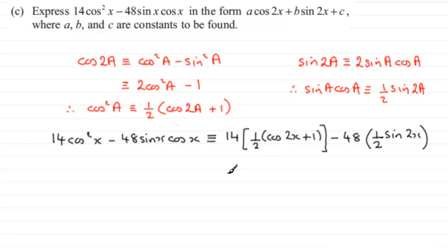So all I need to do now is just expand the bracket. We've got 14 times a half which is 7 times cos2x, 7cos2x. And then we've got 14 times the half which is 7 times the one here so that's plus 7. And then when we come down to this term 48 times a half is 24 times it with sin2x and we've got minus 24sin2x.